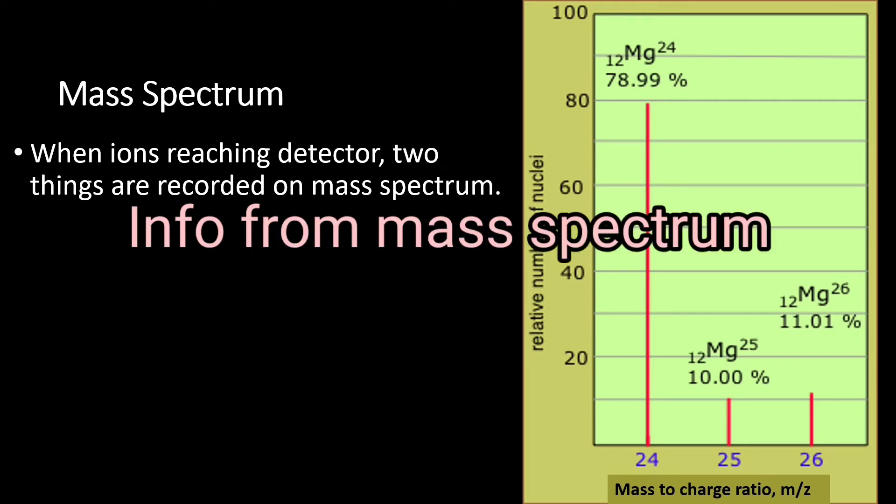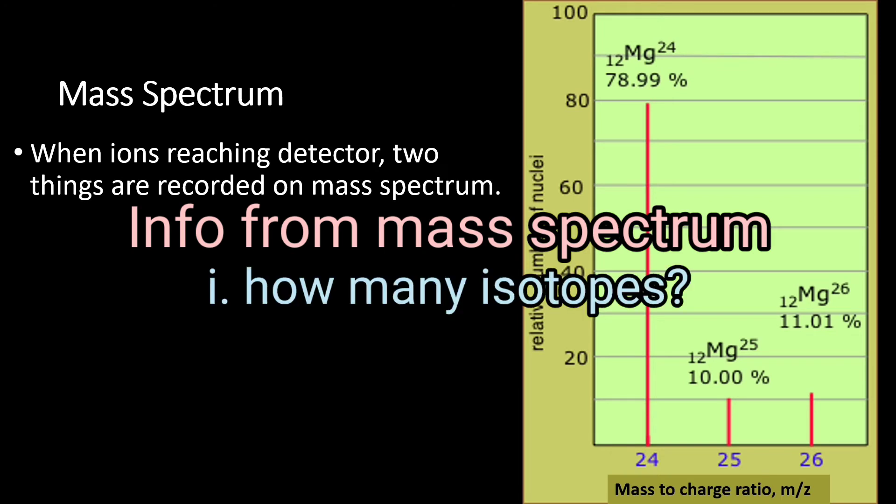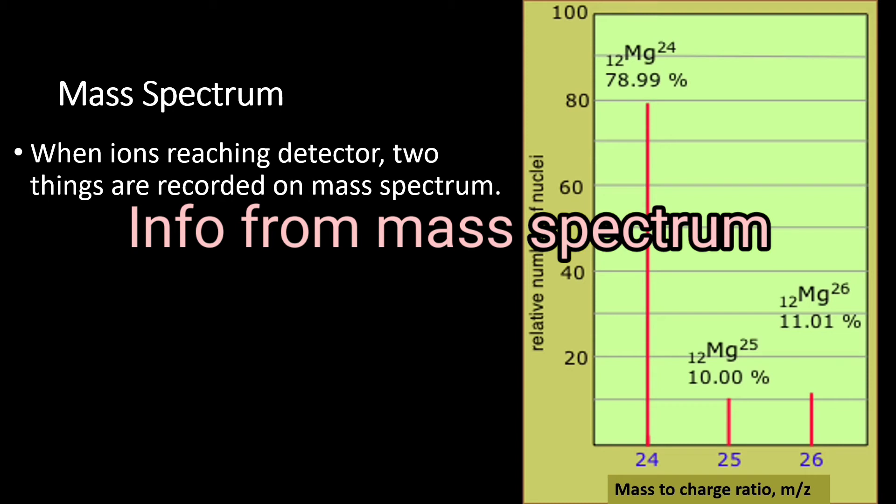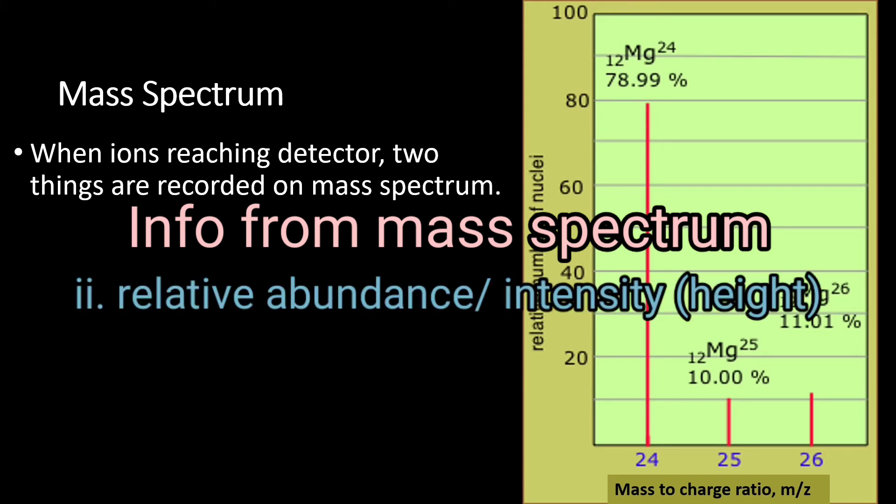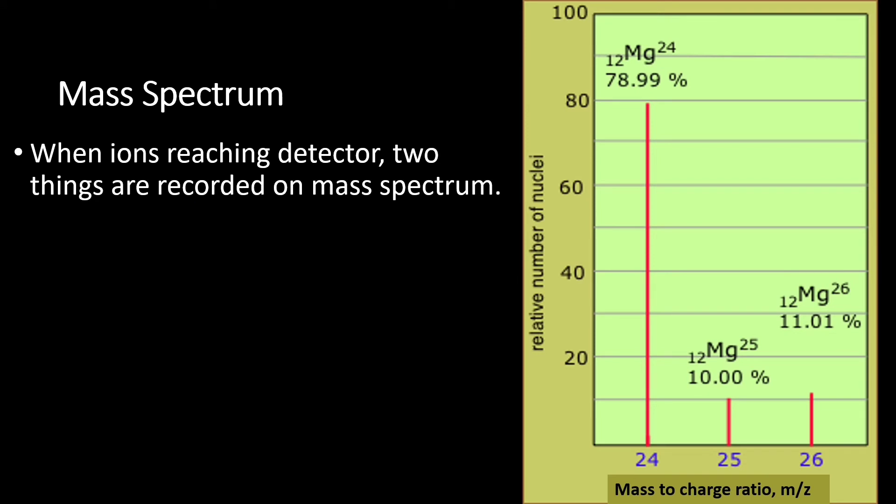So from the mass spectrum, what information that we usually can get? The first one is how many isotopes present in the sample. Like for magnesium, there are three peaks, means that there are three different isotopes present in magnesium. And the second information that we can get is the relative abundance of each isotope. Can you see that in this mass spectrum, magnesium-24 having the percentage abundance of 78.99%. And for magnesium-25, the percentage abundance is 10% and for magnesium-26 is 11.01%.